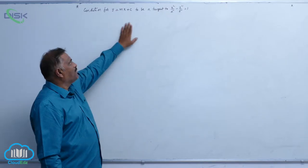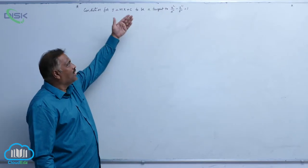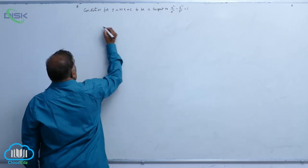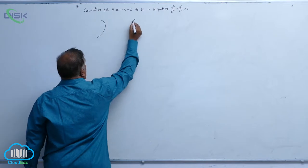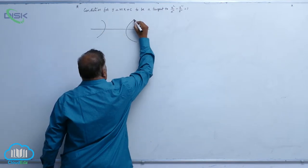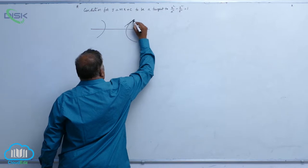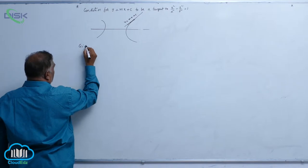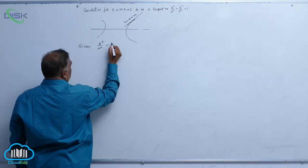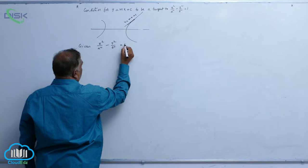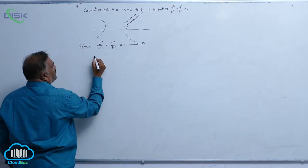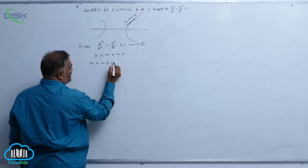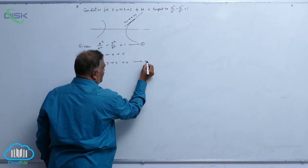We will discuss the condition for y = mx + c to be a tangent to x²/a² - y²/b² = 1. This is a hyperbola. At a particular point the line y = mx + c touches it. Given x²/a² - y²/b² = 1 as equation 1, and y = mx + c, or mx - y + c = 0, as equation 2.